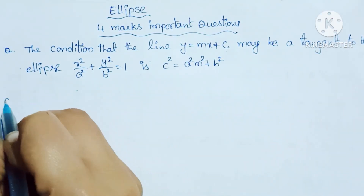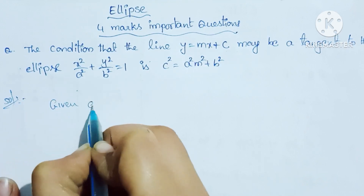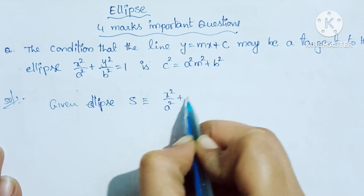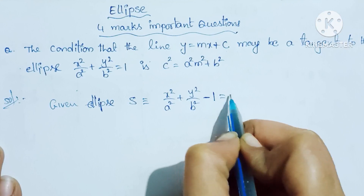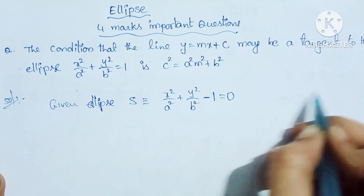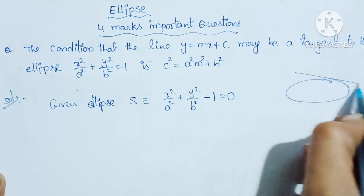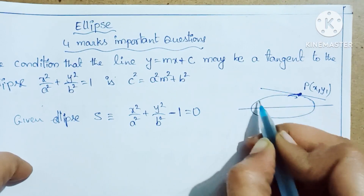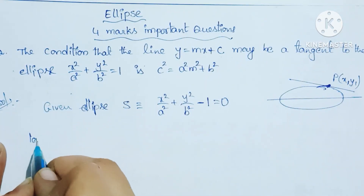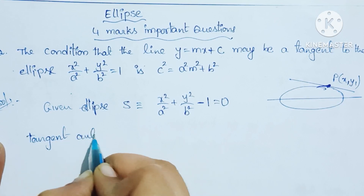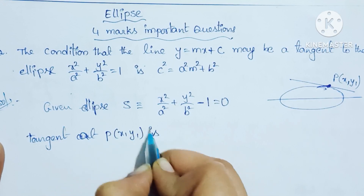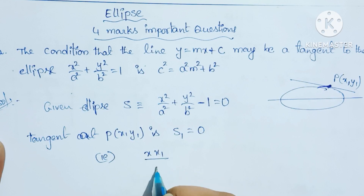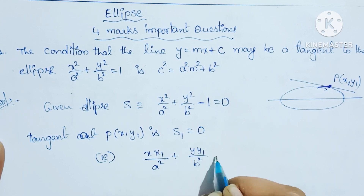Given ellipse S equal to x square by a square plus y square by b square minus 1 equal to 0. This is the condition that we find out. The tangent at point P(x1, y1) — the tangent equation S1 equal to 0, that is xx1 by a square plus yy1 by b square minus 1 equal to 0.